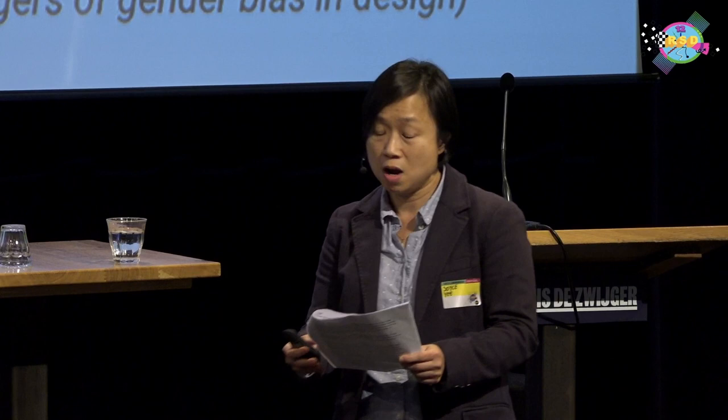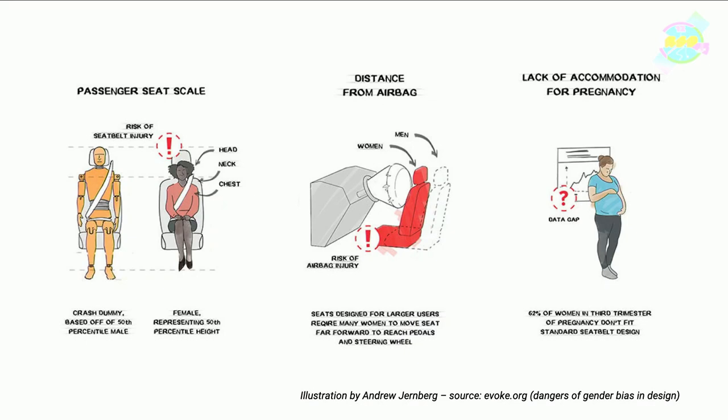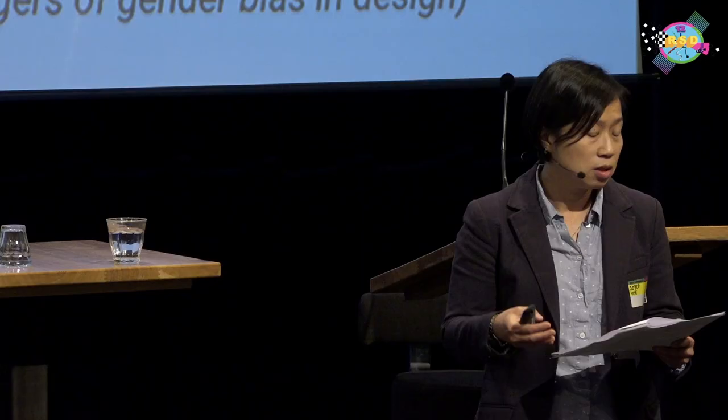Another more recent example comes from Caroline Criado Perez's book called Invisible Women, where she highlights examples of data bias in a world designed for men. Men are more likely than women to be involved in a car crash, but women are 47% more likely to suffer serious injury and 17% more likely to die. This is because seatbelts and airbags in cars are really designed for the normative male body — they don't account for different body shapes, thereby increasing the risk of serious injury to women.